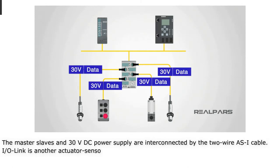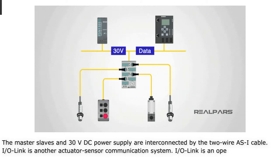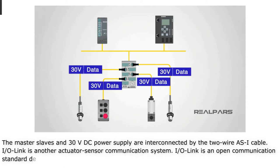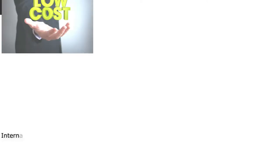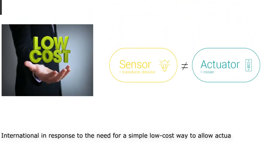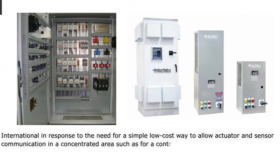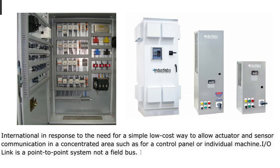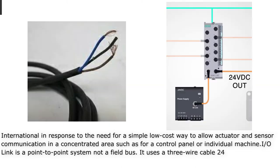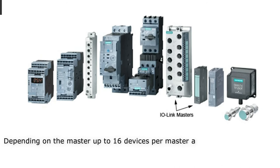IO-Link is another actuator-sensor communication system. IO-Link is an open communication standard developed by the IO-Link research group of Profibus and Profinet International, in response to the need for a simple, low-cost way to allow actuator and sensor communication in a concentrated area such as a control panel or individual machine. IO-Link is a point-to-point system, not a fieldbus. It uses a three-wire cable, 24 VDC power supply, and an IO-Link master, with up to 16 devices per master allowed.